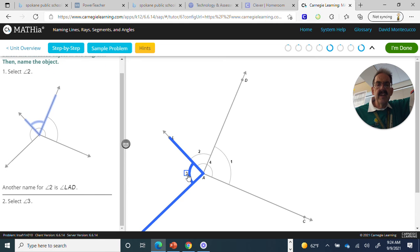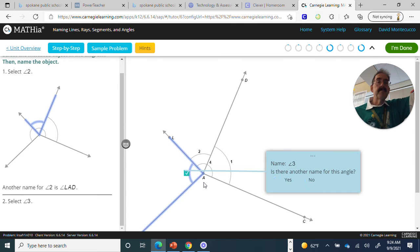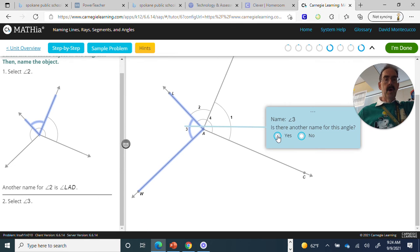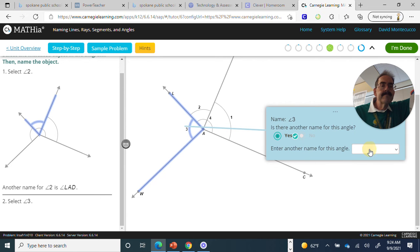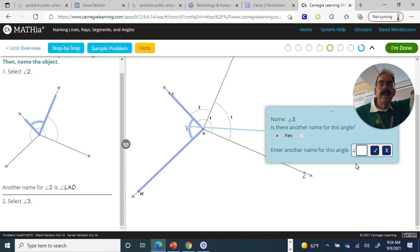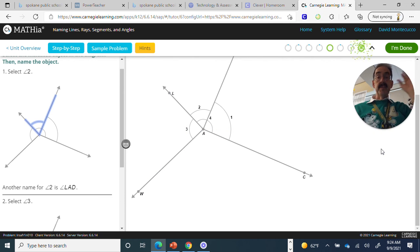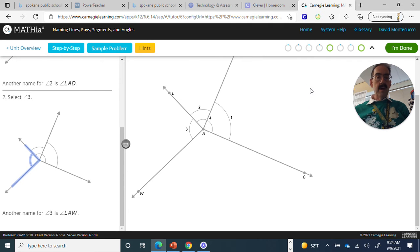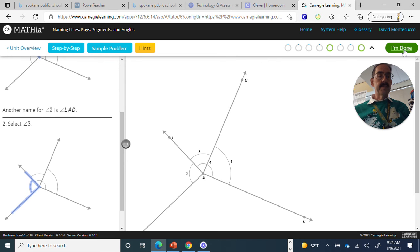Select another name for angle 2. Select angle 3. And this one's going to be LAW. It's the law. For some reason when I hit enter, it's not registering, so I'm having to click on the check mark to make it work. And you can see once you get them right, you get these little green bubbles. And I think we're done with this problem. So let's hit I'm done.